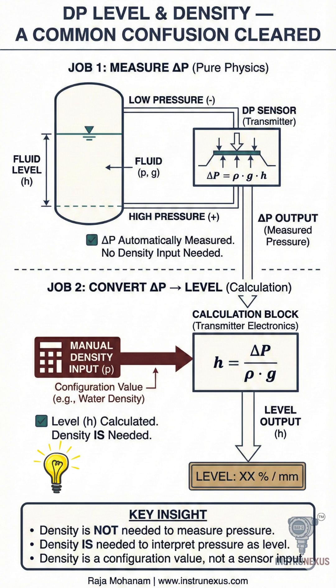But here's the part most people miss. A DP-level transmitter doesn't stop at measuring pressure. It is also expected to convert that pressure into level.